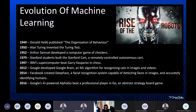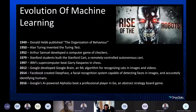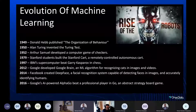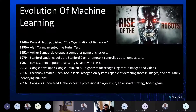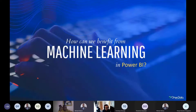In 1997, IBM's supercomputer Deep Blue beat Garry Kasparov in chess. In 2012, Google developed the Google Brain machine learning algorithm, used for recognizing cats in images and videos. In 2014, Facebook created DeepFace, a facial recognition system capable of detecting and accurately identifying humans in images. In 2016, Google's AI-powered AlphaGo beat a professional player in Go — a very hard and abstract strategy board game.